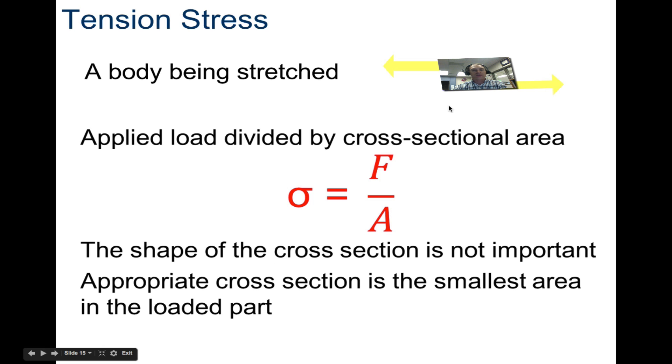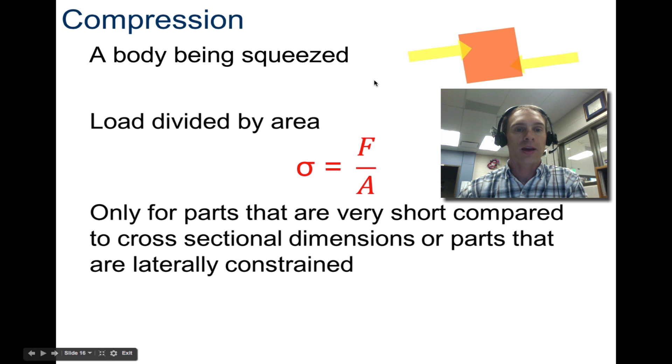The shape of the cross-section is not important. Appropriate cross-section is the smallest area in the loaded part. You take that smallest area, and that's what you're going to use for testing out tension stress. Compression is squeezing it together, and compression is also a stress. Same equation here. It's force divided by area. You're just pressing in.